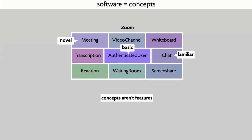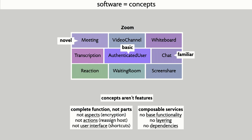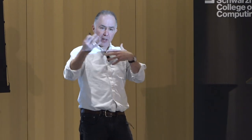Concepts are not features. These concepts represent complete coherent functions, not pieces of a function. They're not aspects like encryption, which can be layered and applied to anything. They're not individual actions like the feature of reassigning the host of a call. And they're not user interface features like the provision of shortcuts. Importantly, concepts are truly composable services that don't rely on any base functionality. When people talk about features, they have in mind a base functionality with little tweaks on top. But there's no layering here — these concepts are things you interact with on an equal basis, with no dependencies between them, which means they can be built independently.